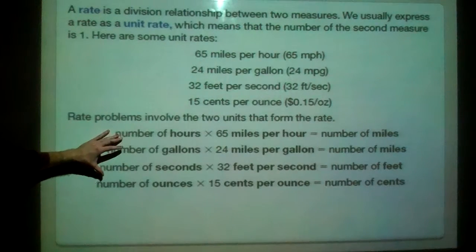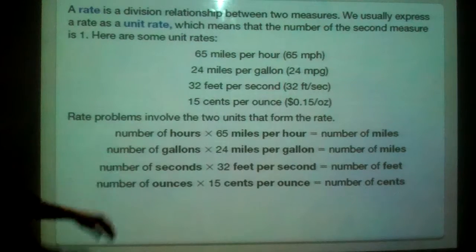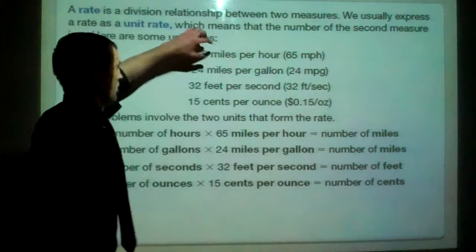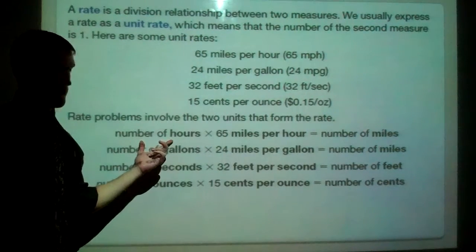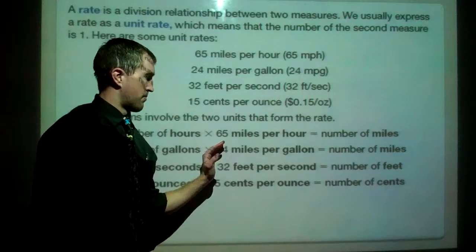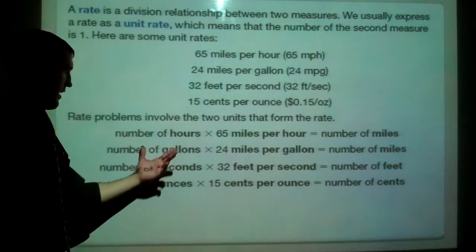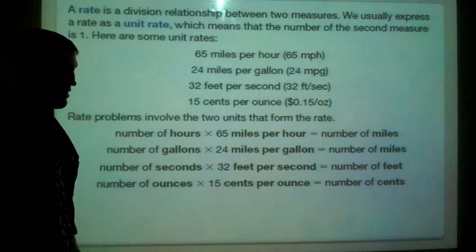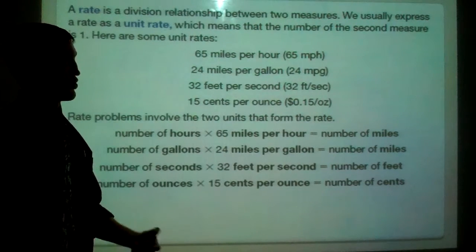It shows us here a few different ways to involve our two units. If we want to solve for the number of miles, say for 65 miles per hour, we'll take however many hours we've been driving, multiply that by 65, we'll get our total number of miles driven. And that goes for gallons, seconds, ounces too. So it's a little more easy to see once we jump into a problem.